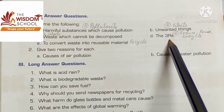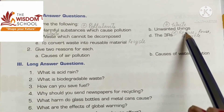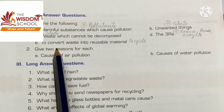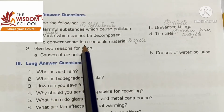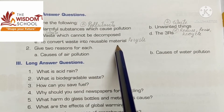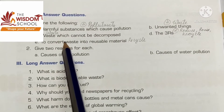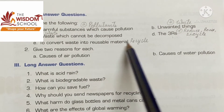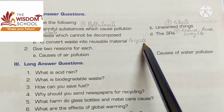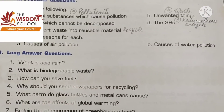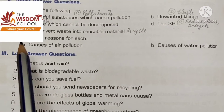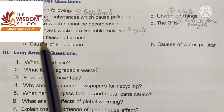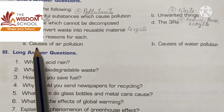What are the three R's from this chapter? They are reduce, reuse, and recycle. To convert waste into reusable materials, the process is called recycling. Now give two reasons for each of the following.